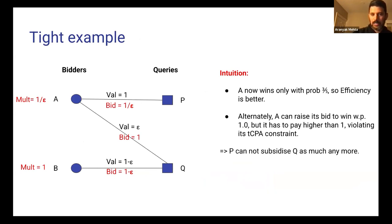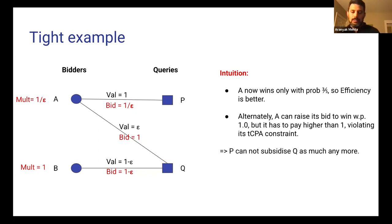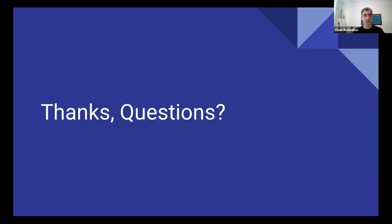I'll give a quick intuition as to why this works. Looking at the tight example for the second-price auction, that example no longer works under RAND(alpha, P). Bidder A was bidding high, bidding 1 to try and grab query Q, but now with these bids, A only wins with probability 3/5. Therefore efficiency in equilibrium is better. If A tries to win Q with probability 1, it has to pay much higher than the bid 1 minus epsilon of its competitor, violating its TCPA constraint. This is essentially the intuition for why RAND(alpha, P) has a better price of anarchy. Thank you.